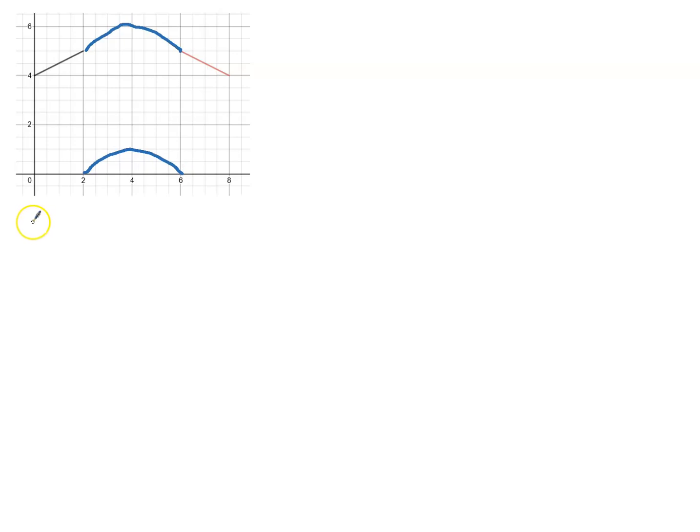So in this case it's going to have the equation of the form y equals some number. I don't know how much it's been stretched vertically, so A stands for the amount of vertical stretch away from the x-axis. Because two is a zero, one of the factors is x take two, and the other factor is x take six.